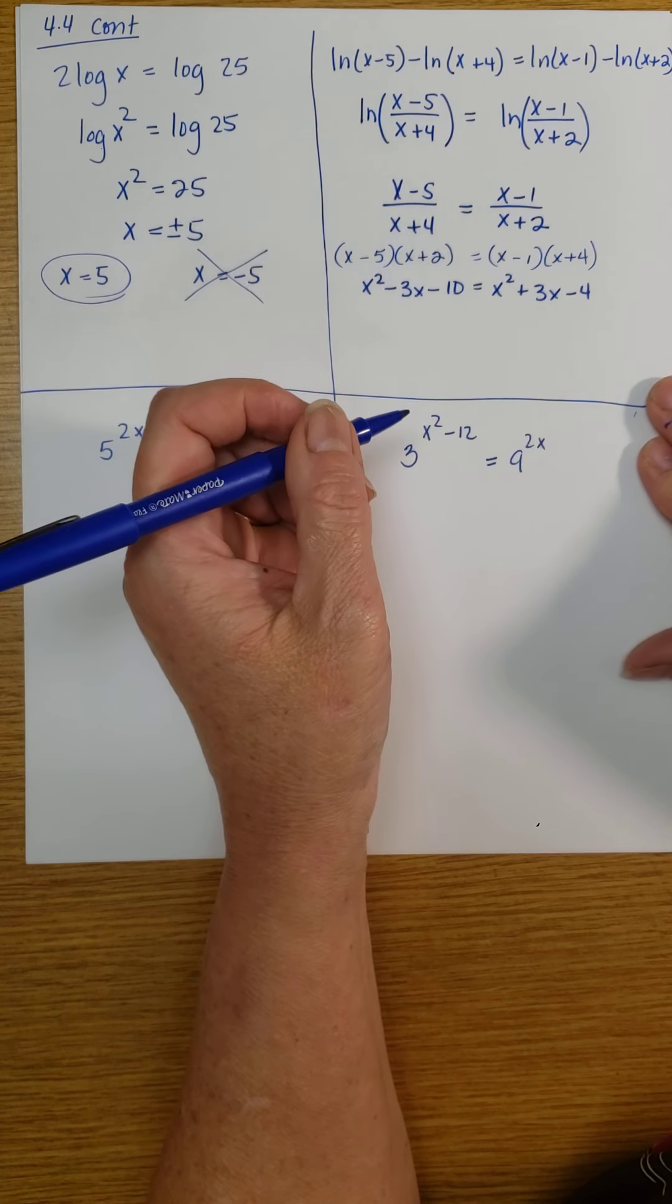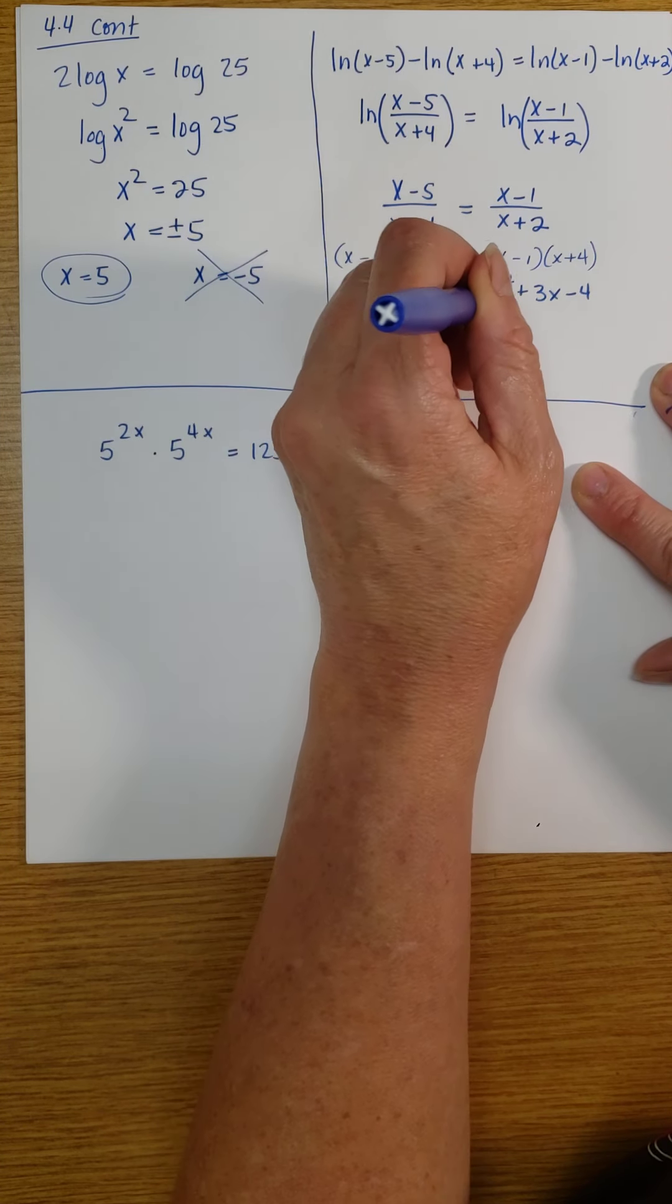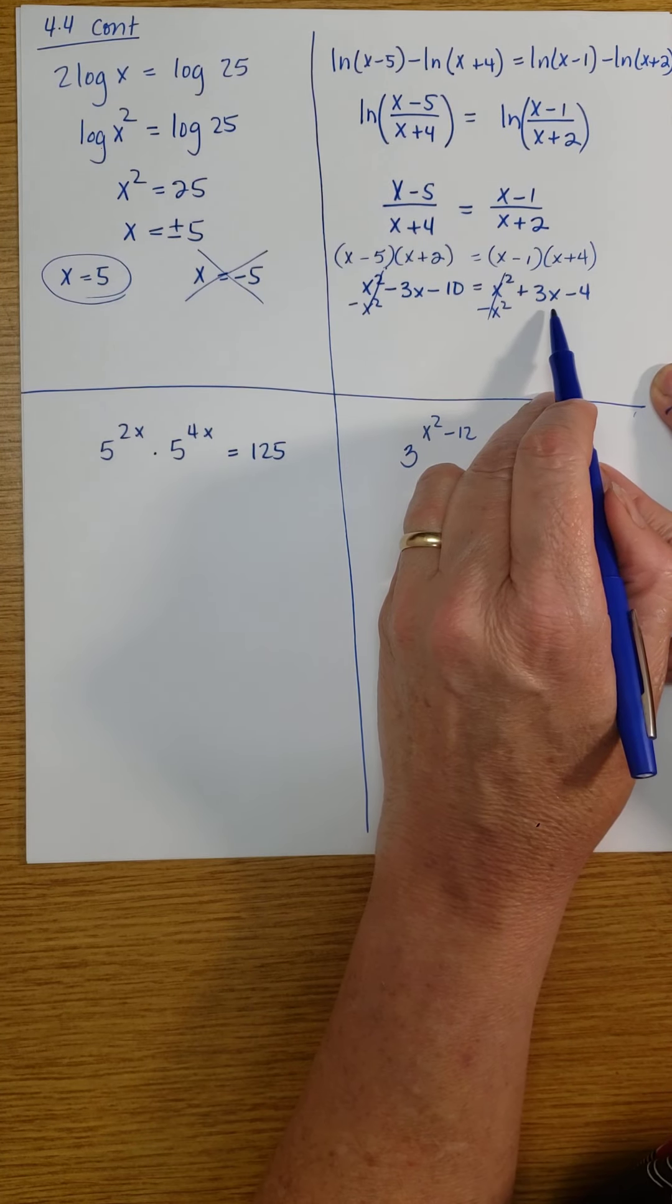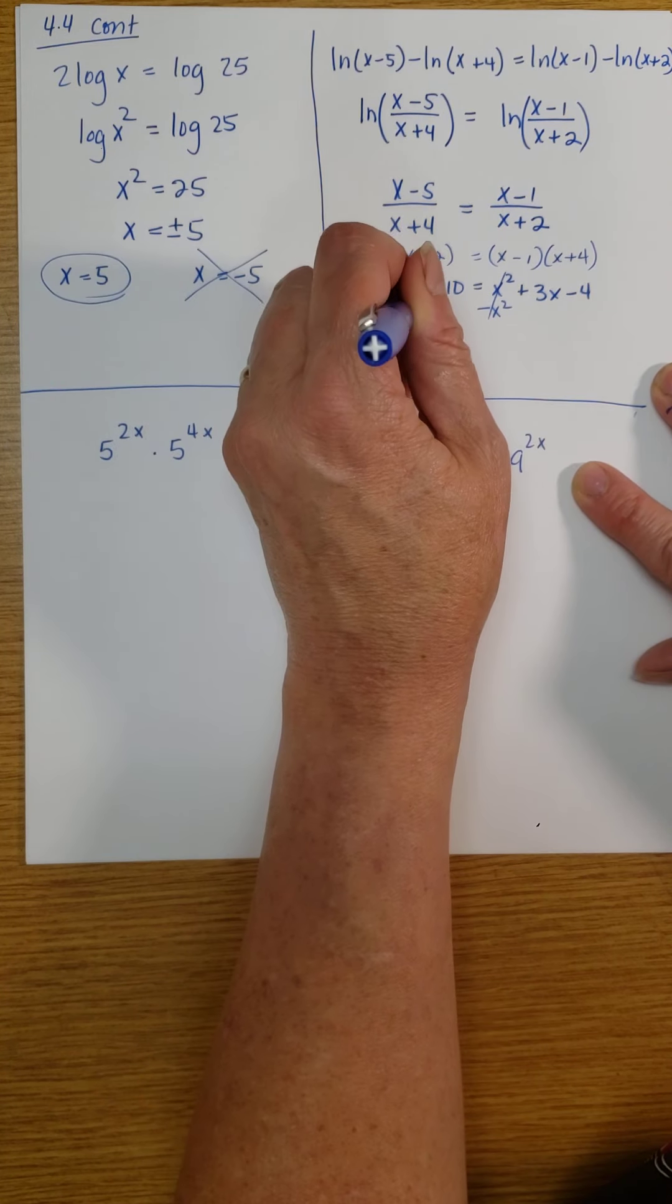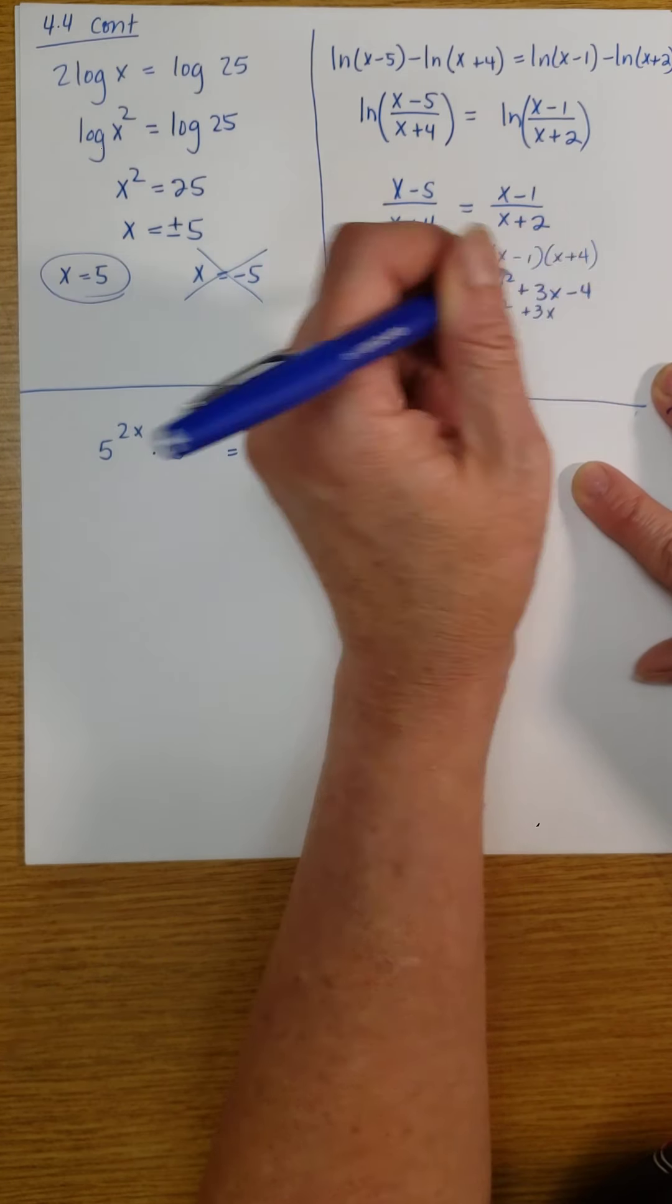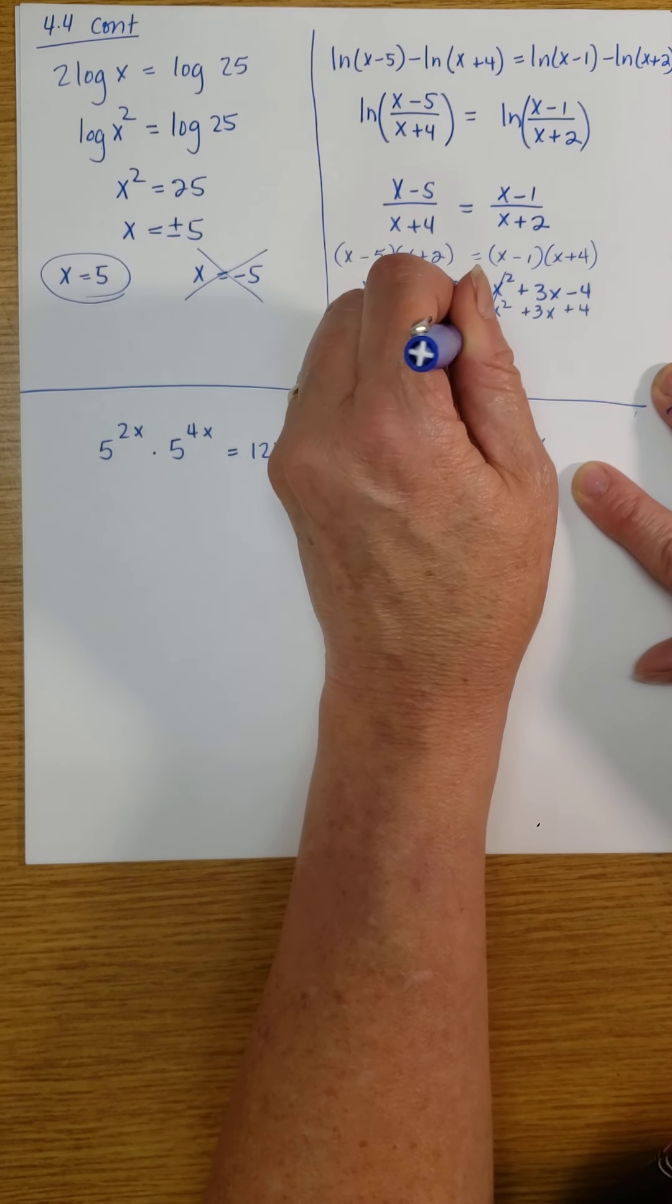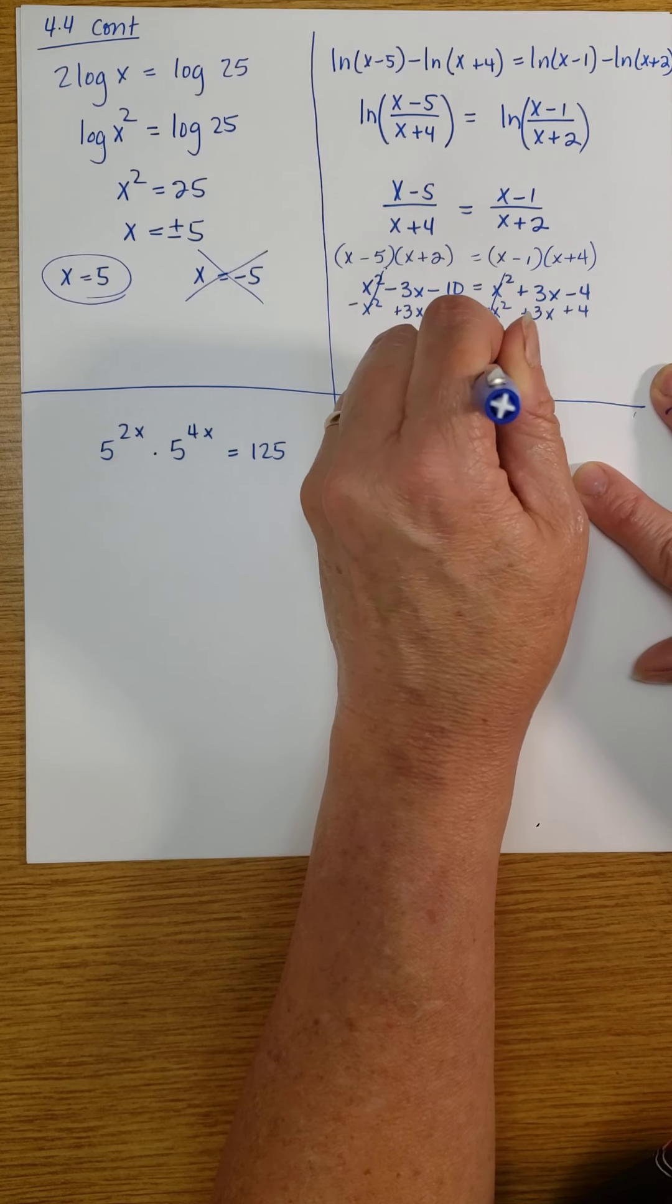And the x squareds are going to cancel. So when I subtract x squared from both sides, those are going to go away. And I can subtract or add 3x to both sides. And then I can add 4 to both sides. And I will have negative 6 equals 6x or x equals negative 1.